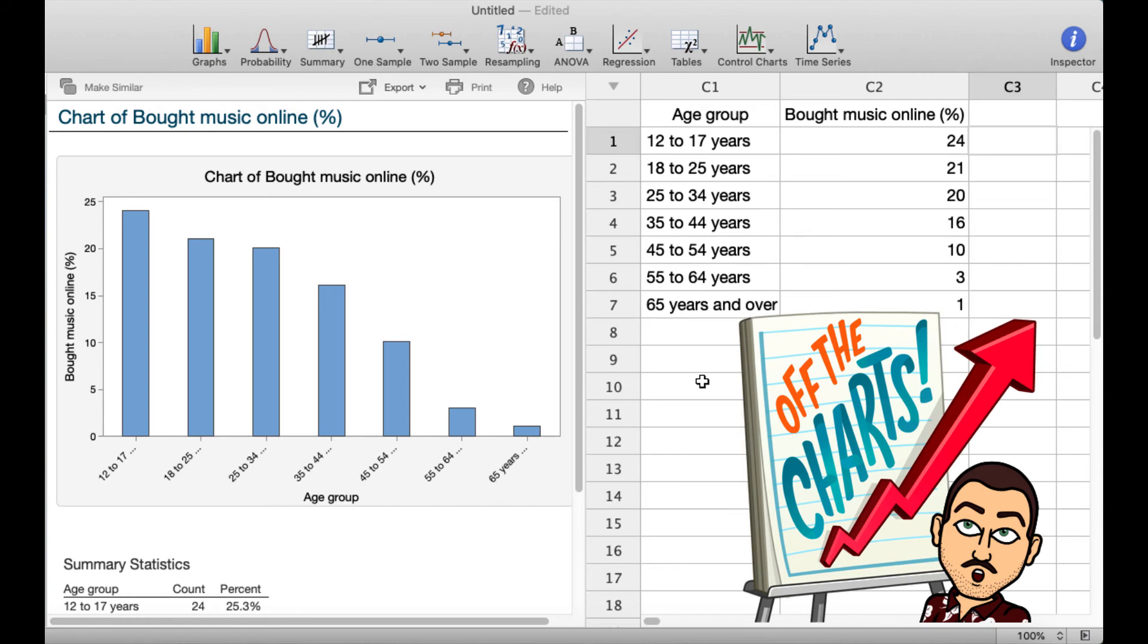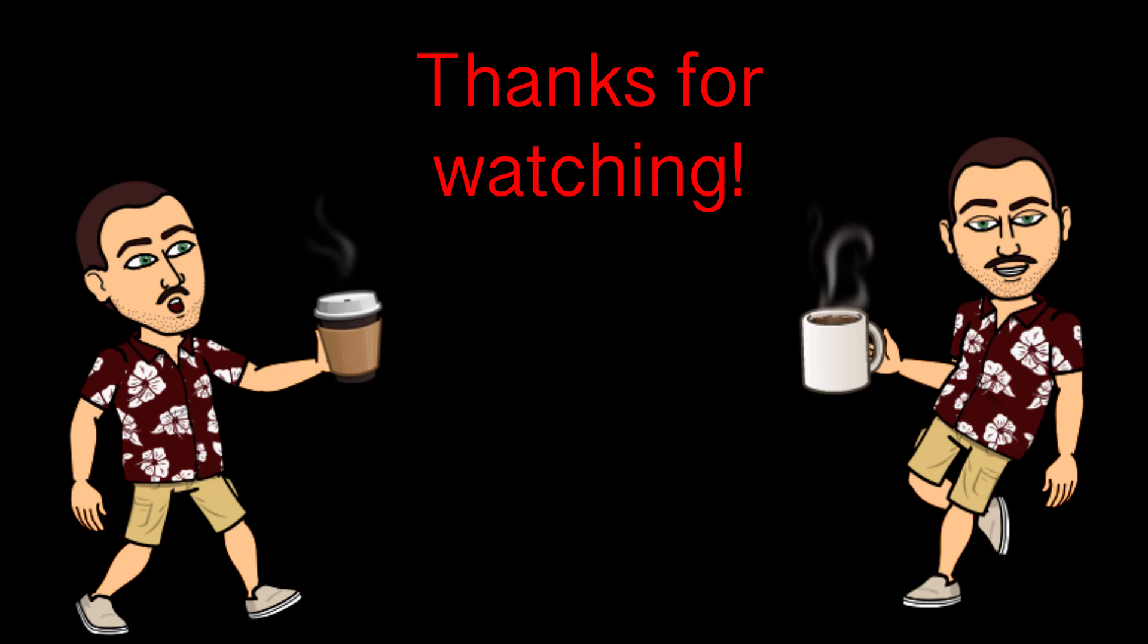The x-axis is the age groups. The y-axis is the percent who bought music online. Make sure to subscribe for more Coffee and Math with Dr. Wessel Couch. Don't text and drive. Bye-bye.